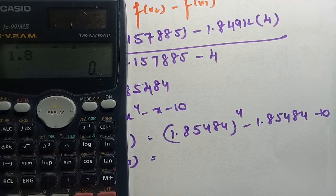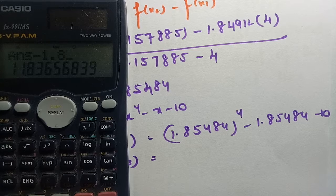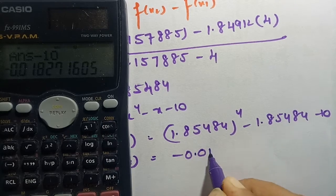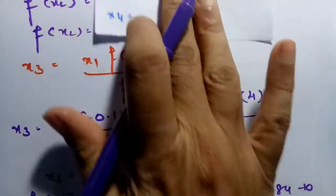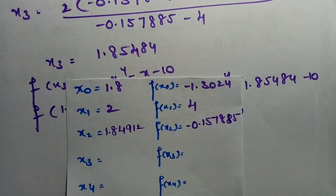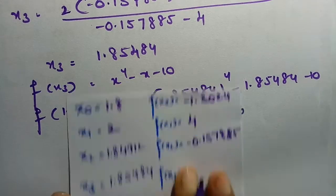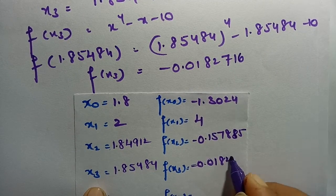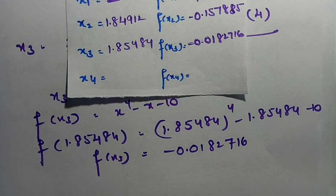We compute f(x₃) = 1.85484⁴ - 1.85484 - 10 = -0.0182716. So x₃ = 1.85484 and f(x₃) = -0.0182716.